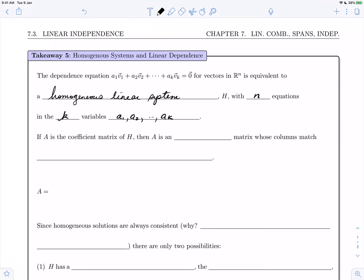If A is the coefficient matrix of H, then A is an n by k matrix whose columns match the components of the vectors v1, v2, up to vk. We can represent A diagrammatically where the vectors appear as the columns.